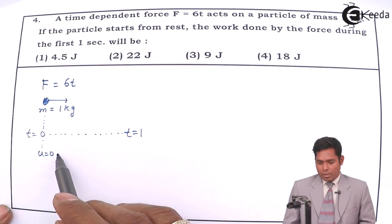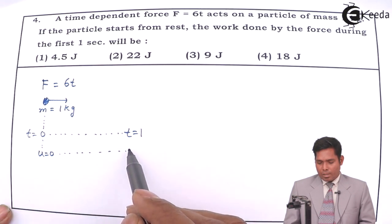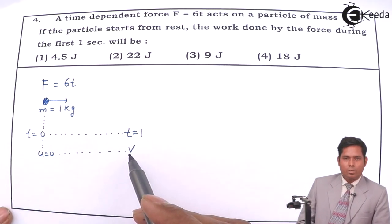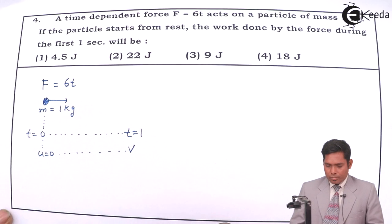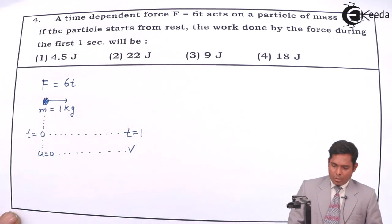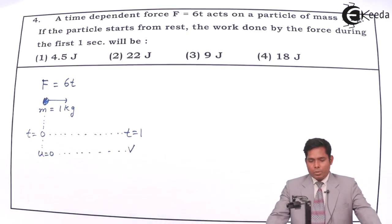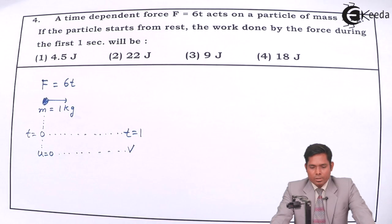After one second, I don't know whatever is the velocity. Suppose I write that the velocity is V here, V at the end of one second is this much. Then we have to find the work done by the force during the first one second.